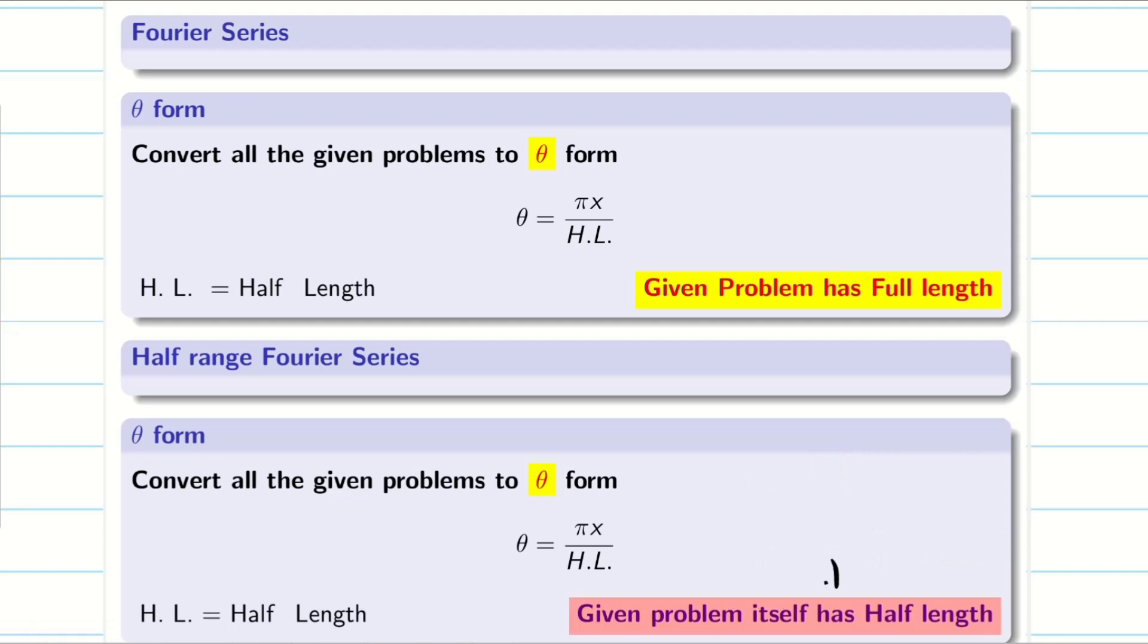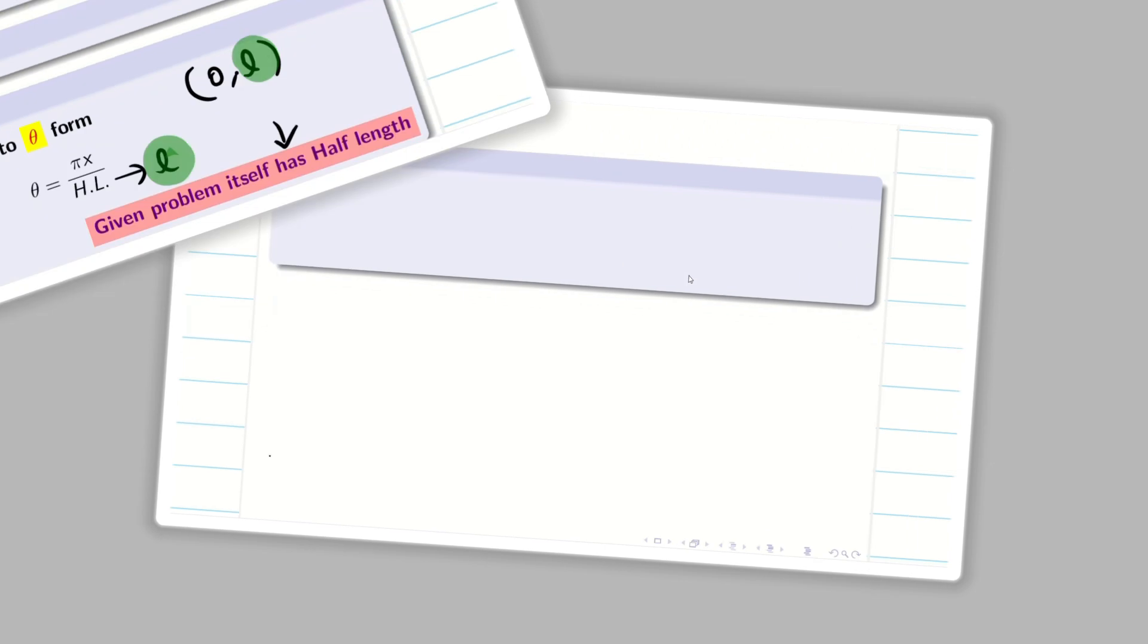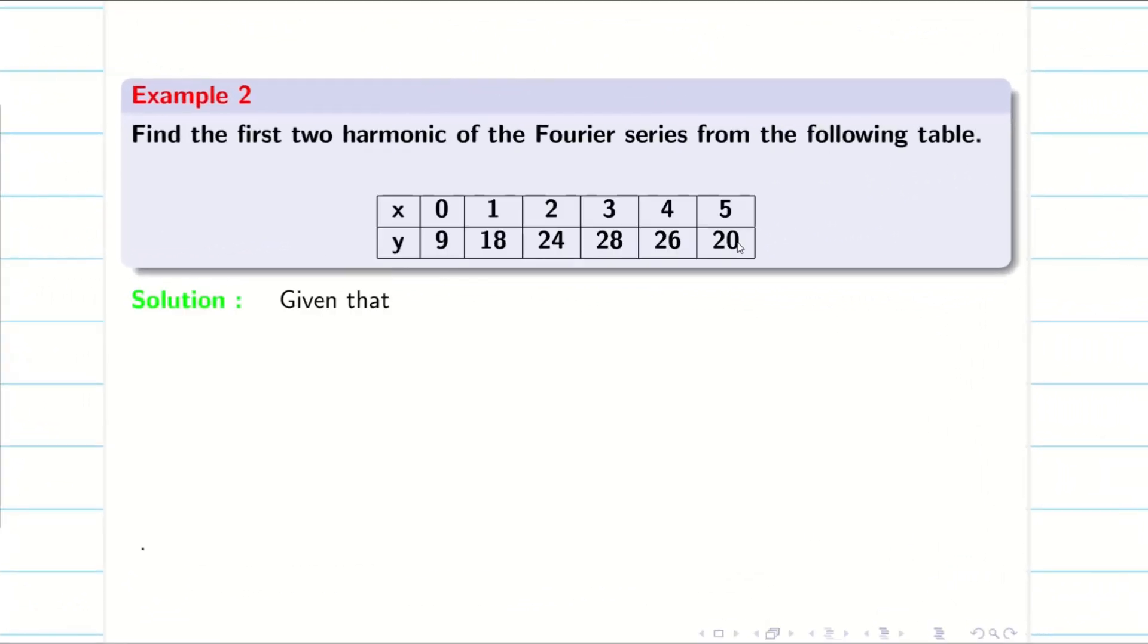That is what we mentioned. Given problem itself has the half-length 0, l. Here, 0, 2l. This is going to be l and this is going to be l here. So, we have to take as it is. Why I am repeatedly telling this is very important. If sometime they ask half-range, we should be able to solve the problem. This is the only change. So, now we see this problem.